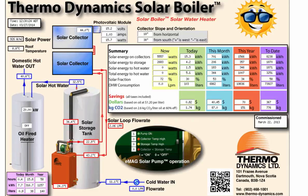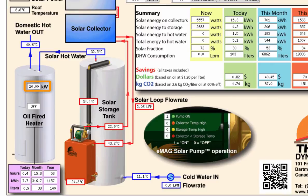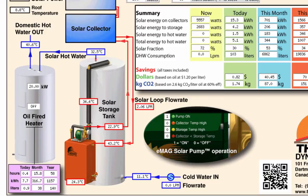The system diagram also displays the sun's solar power as measured in watts per meter squared, the roof temperature, the power rating of your auxiliary heater, whether it is electric or oil fired, whether your water heater is currently on or off, and the total run time hours, including kilowatt hours consumed, and in the case of oil fired units, the liters of oil consumed.